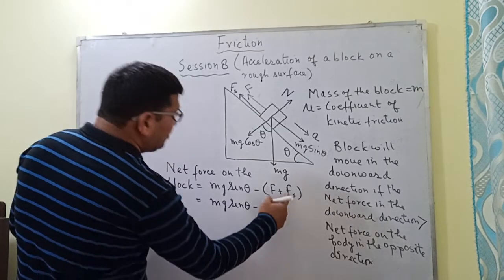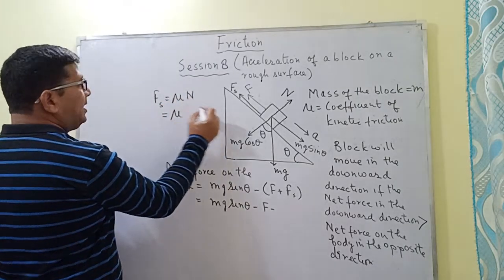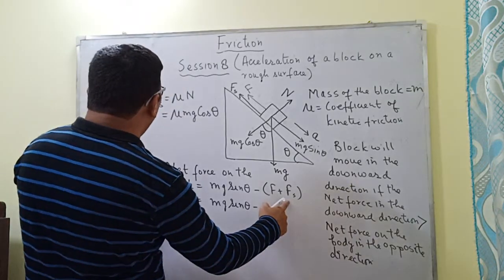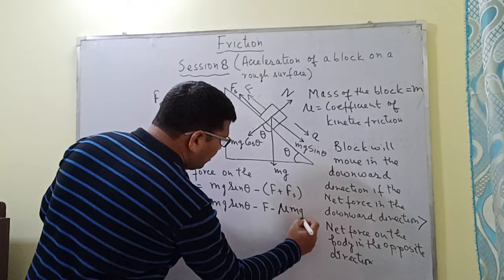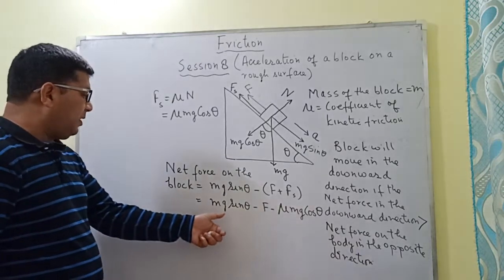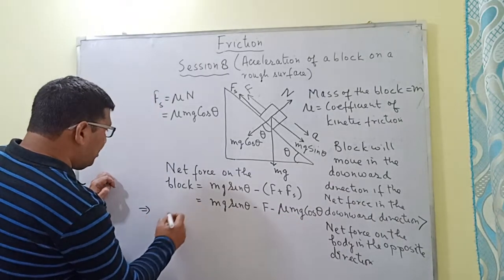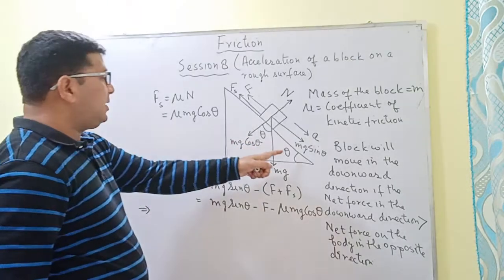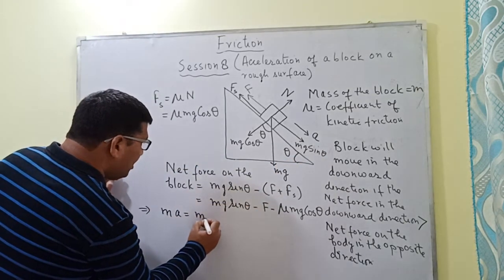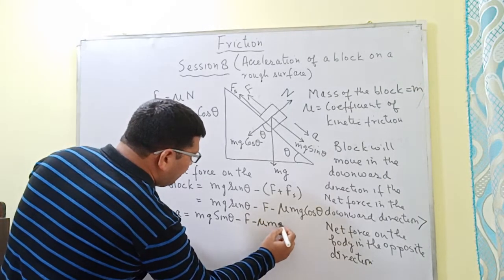The net force equals mg sin theta minus F minus fs, where fs equals mu times N, and N equals mg cos theta. So the net force is mg sin theta minus F minus mu times mg cos theta.